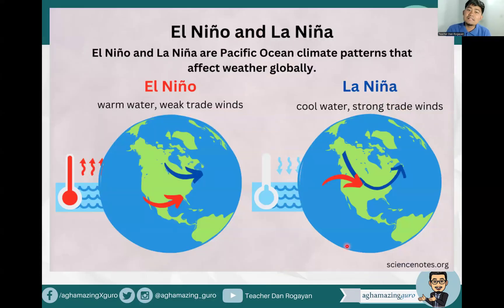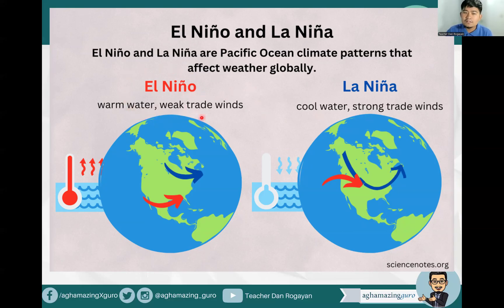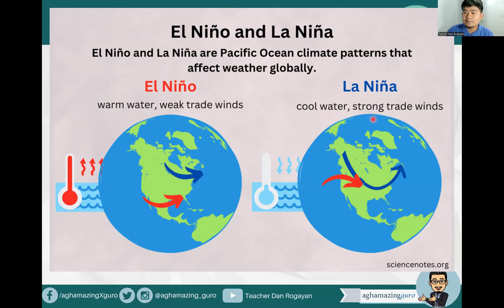What's the difference between El Niño and La Niña? El Niño and La Niña are Pacific Ocean climate patterns that affect weather globally. El Niño is characterized by warm water and weak trade winds — in layman's terms, we call it tag-tuyot, meaning there's drought. On the other hand, La Niña is characterized by cool water and strong trade winds — that's the continuous rainfall.